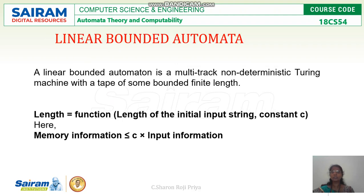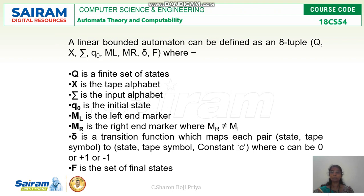Next we can discuss linear bounded automata, or LBA. The language accepted by linear bounded automata is context-sensitive languages. A linear bounded automata is a multi-track non-deterministic Turing machine with finite length — multiple tracks in a single tape, non-deterministic, and the length of the tape is finite.